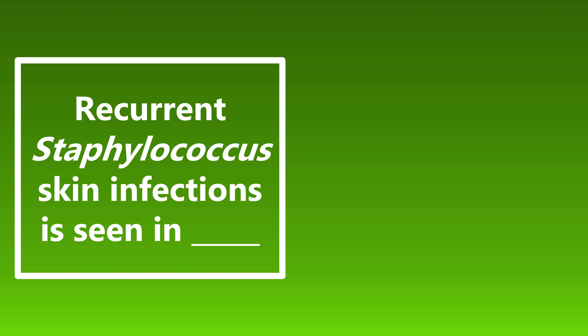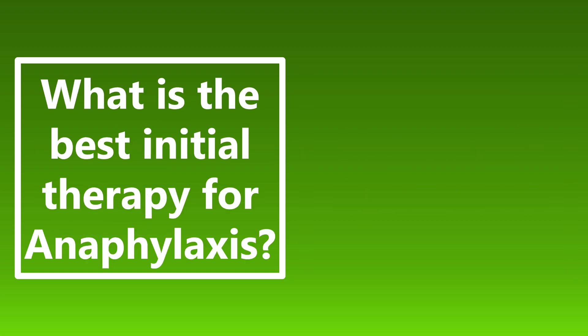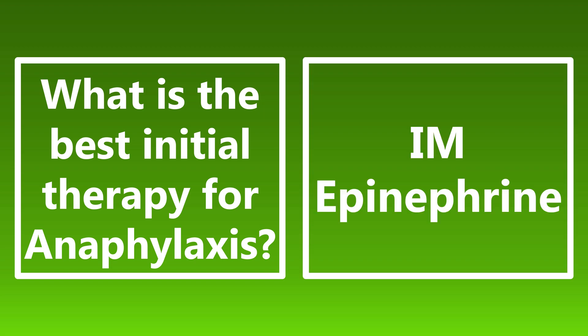Recurrent staphylococcus skin infections are seen in hyper-IgE syndrome. What is the best initial therapy for anaphylaxis? This is going to be IM epinephrine — not sub-Q, not IV. It is IM epinephrine, typically 0.3 to 0.5 milligrams. You don't need to know the dosing as much, but you do need to know the route of administration. Best initial therapy for anaphylaxis: IM epinephrine.